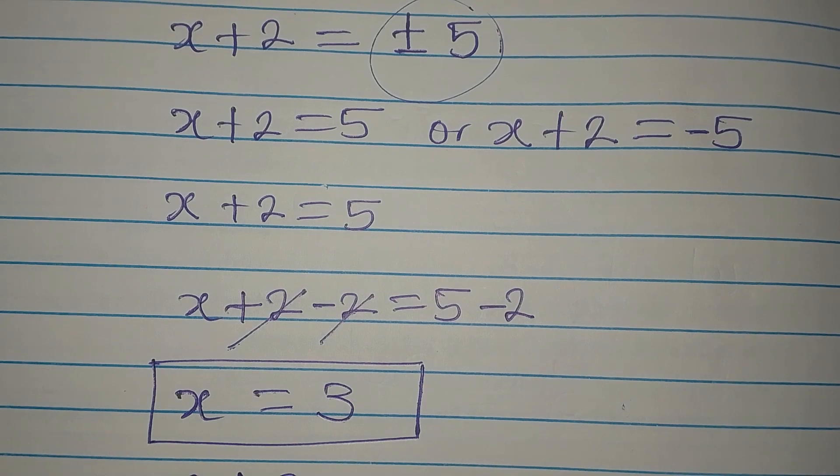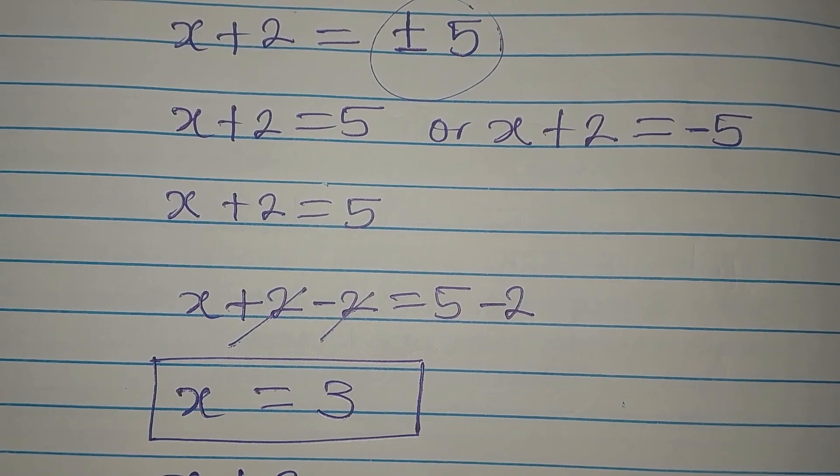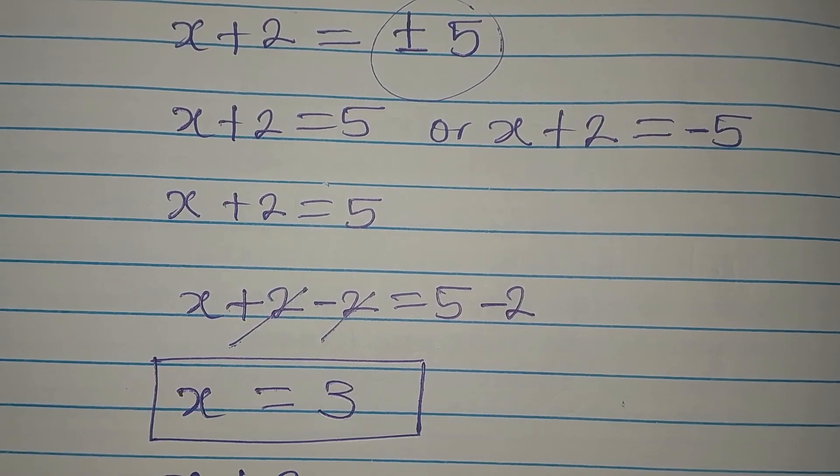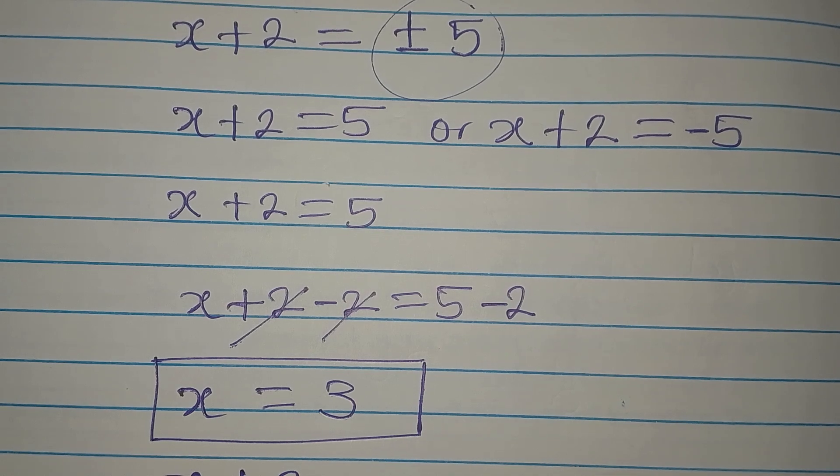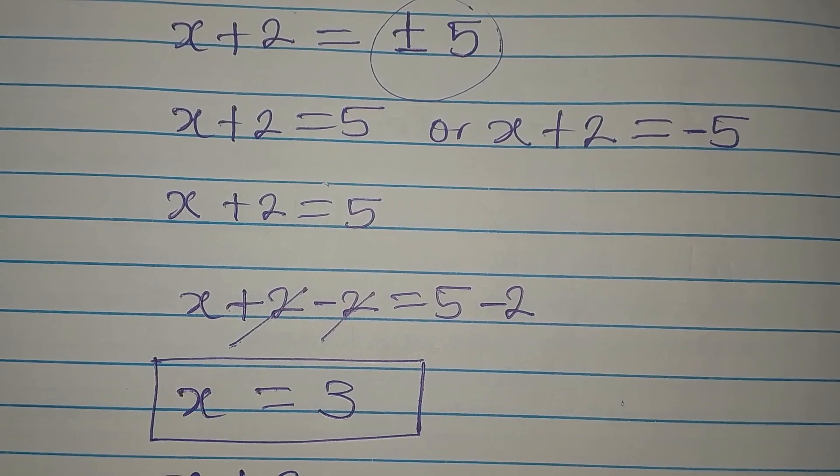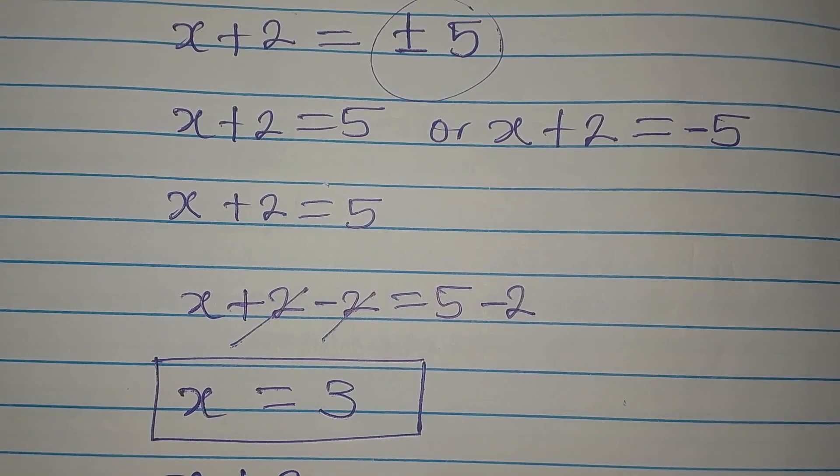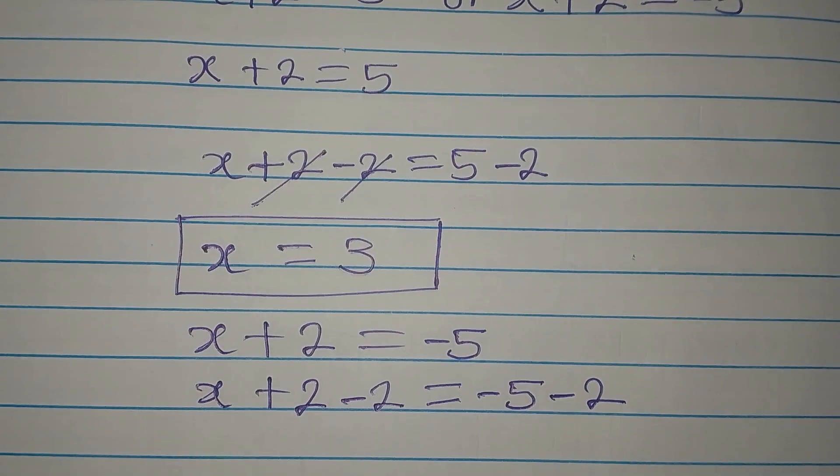So this means that x plus 2 minus 2 is equal to negative 5 minus 2. This is it over here.